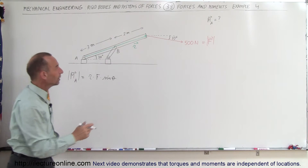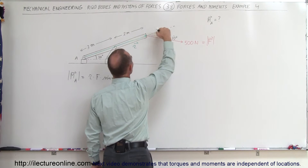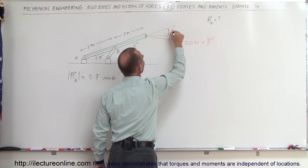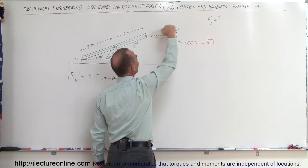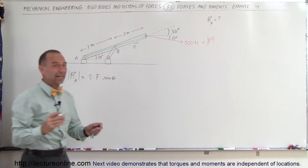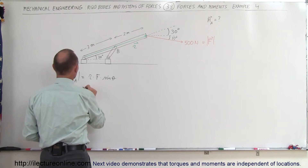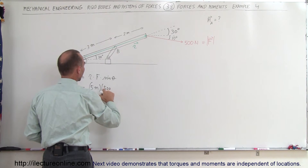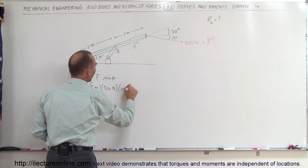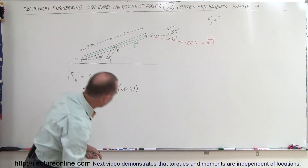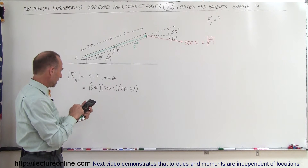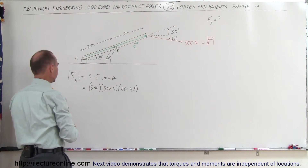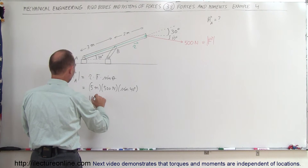So what is the angle between the two? If we draw a line that follows the line of the beam and then the horizontal, this angle must be the same as this angle down here — so that must be a 30 degree angle. This is a 10 degree angle. So the total angle between the line of the beam and the line of action of the force would be 40 degrees. Therefore, this is equal to R, which is 5 meters, times the force of 500 newtons, times the sine of 40 degrees. That would be 2,500 times the sine of 40, which gives us 1,607 newton meters.